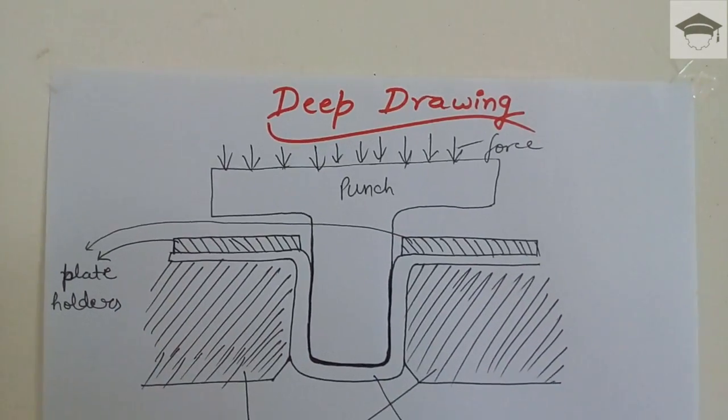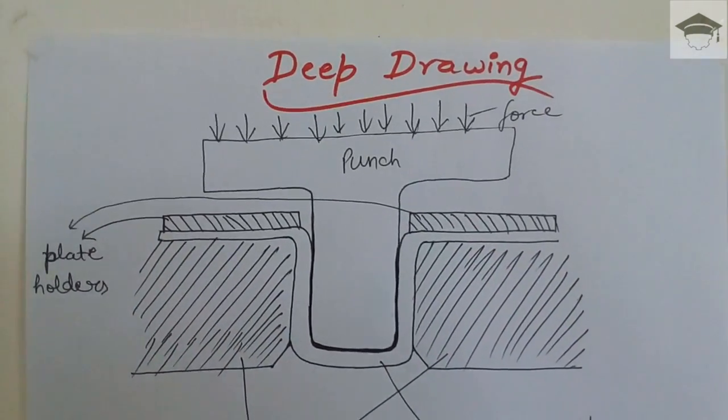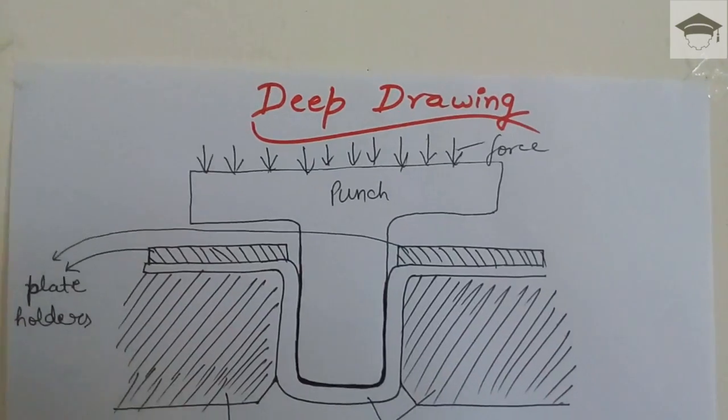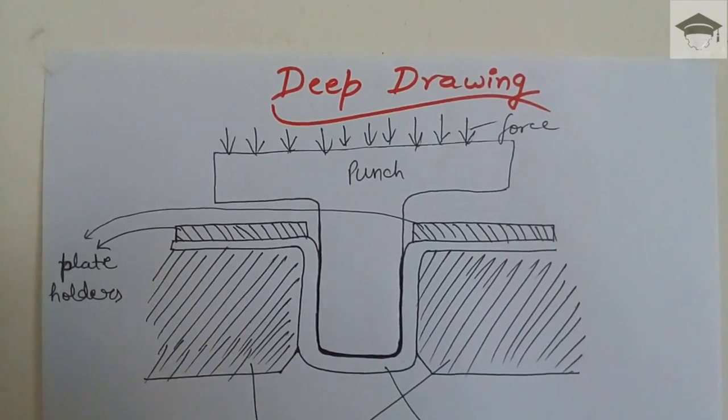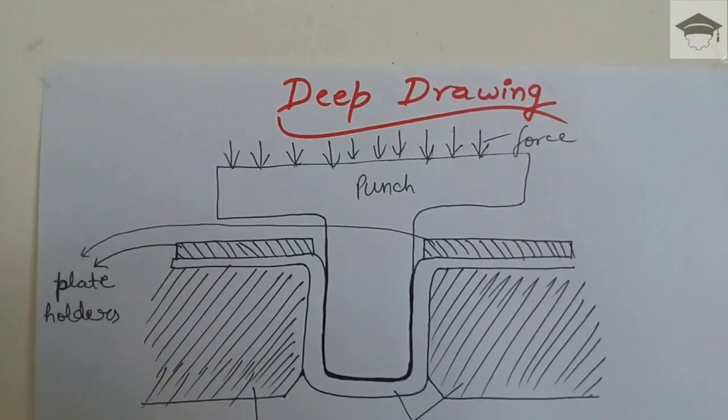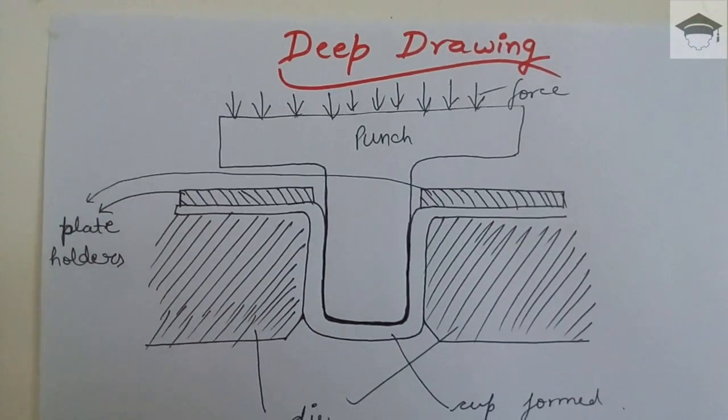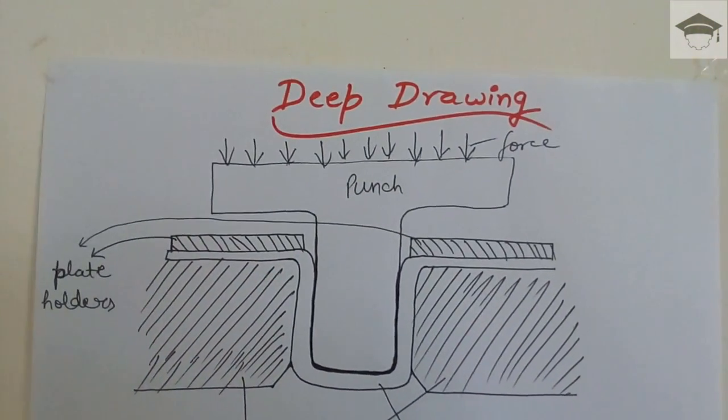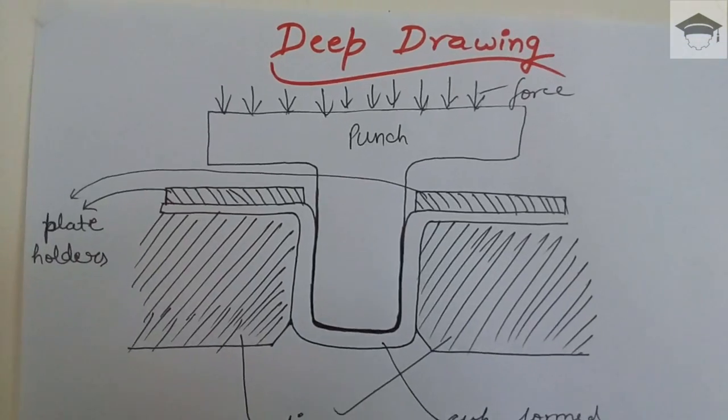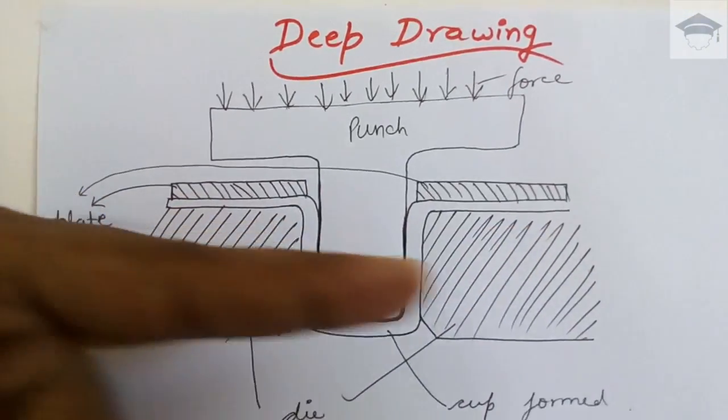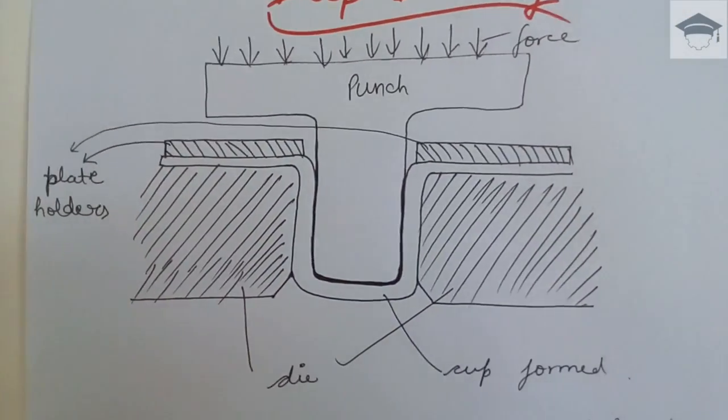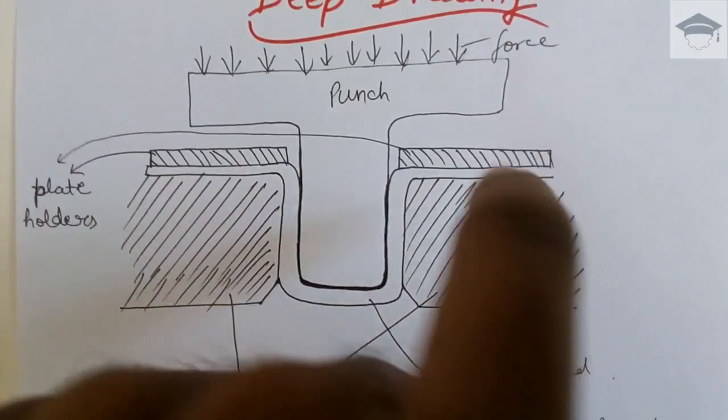If you find this video helpful, please share it and please press the like button. Now, what is deep drawing? Deep drawing is associated with sheet metal. It is a sheet metal operation in which we form a cup. The cup is formed by placing the sheet like this, vertical like this, horizontally, and then the punch, this is the punch.